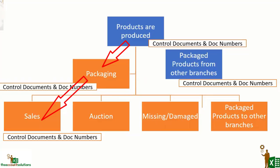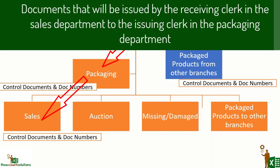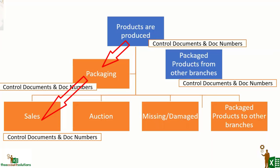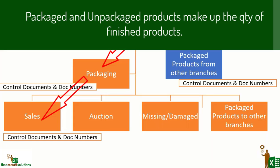When sales receive items, they should only post the ones that are packaged. That means for every batch that is packaged and sent to sales, there should be a docket, receipt, or control document detailing the products packaged and the quantity sent to sales. Sales receive these items and they are now available for sale. The system will show you the total quantity available for sale and those not yet packaged.